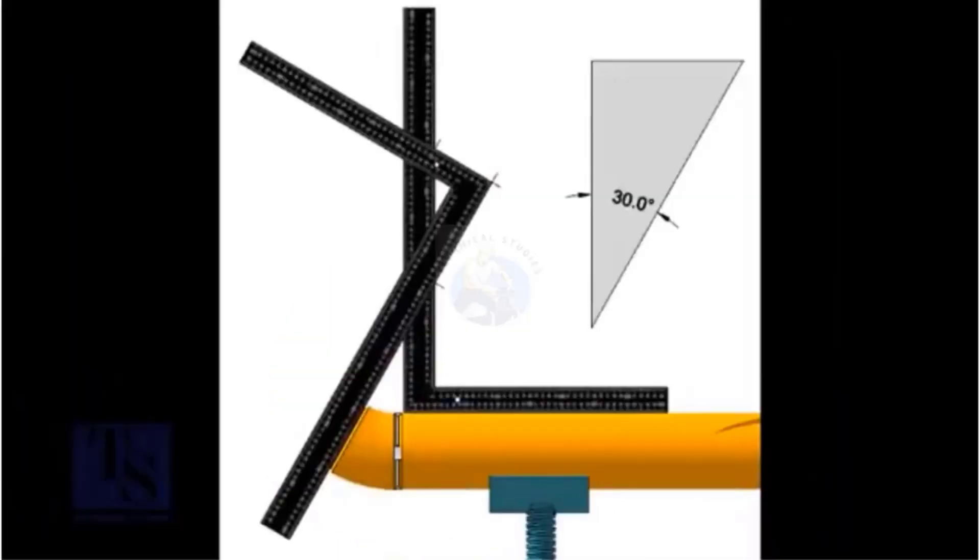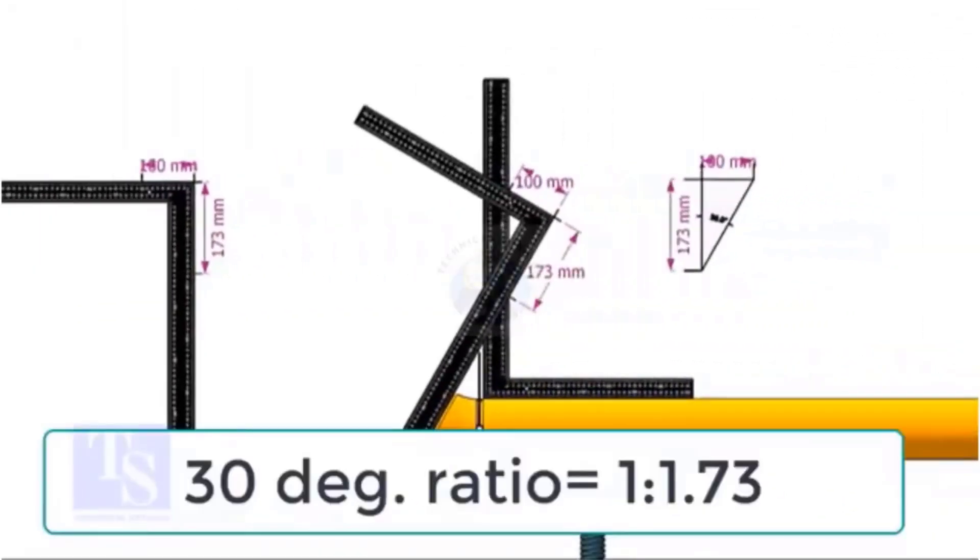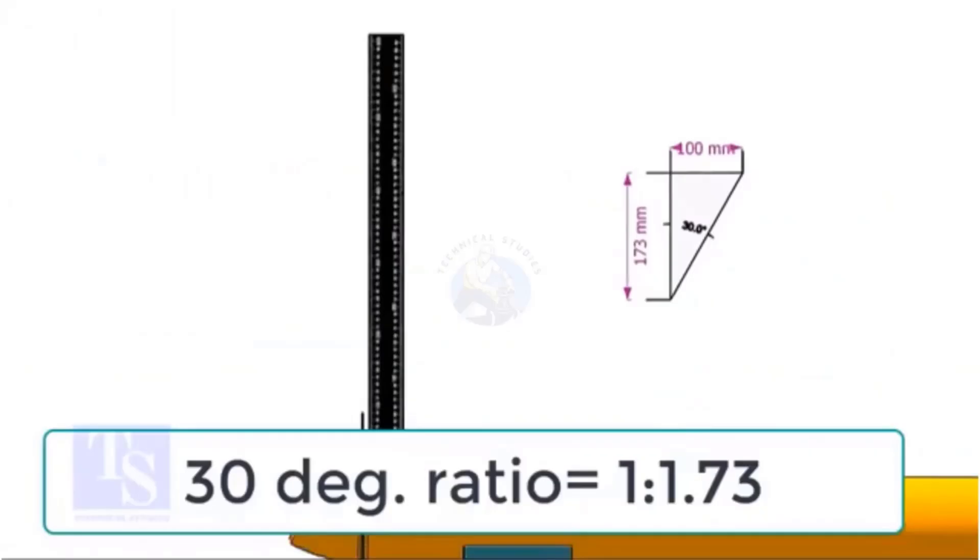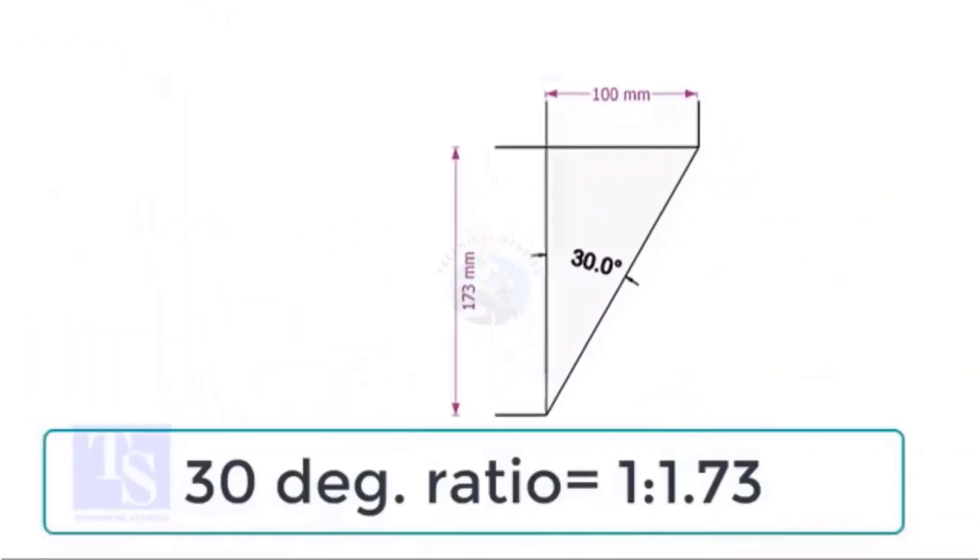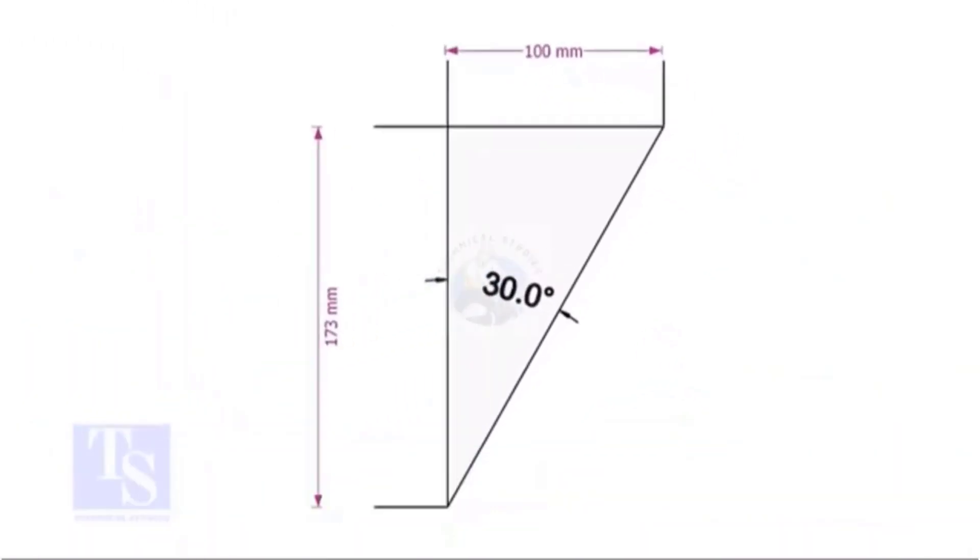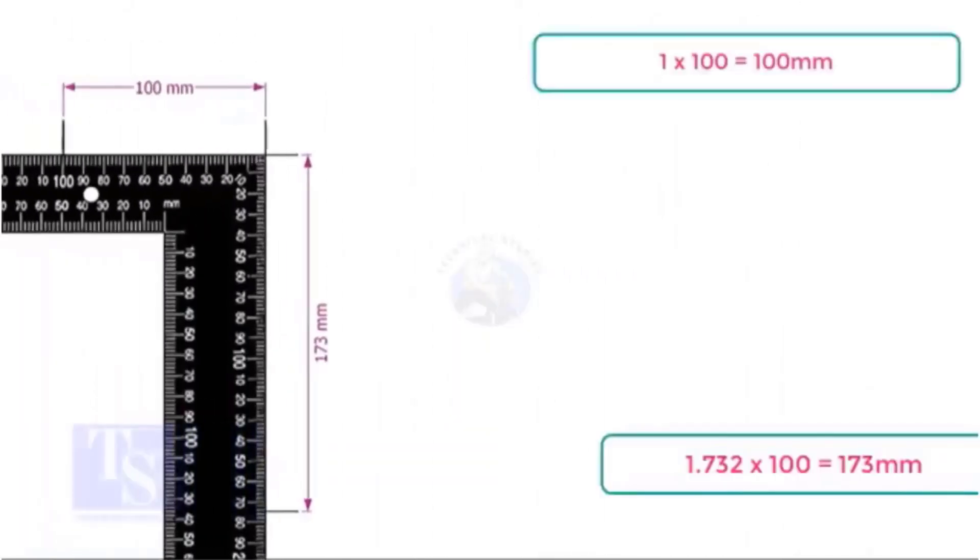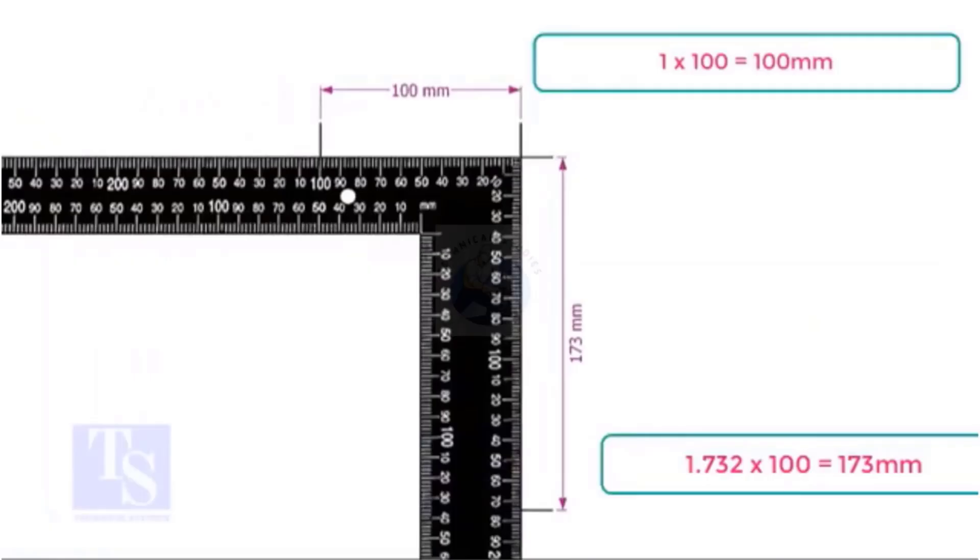Let's start with the 30 degrees elbow fit up. For a 30 degrees elbow, the ratio of the set to the run is 1 to 1.732. In this example, I multiplied both the set and the run by 100.